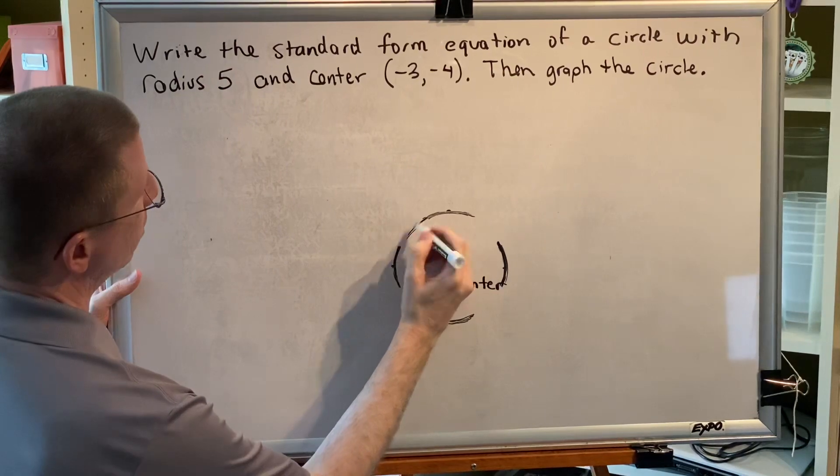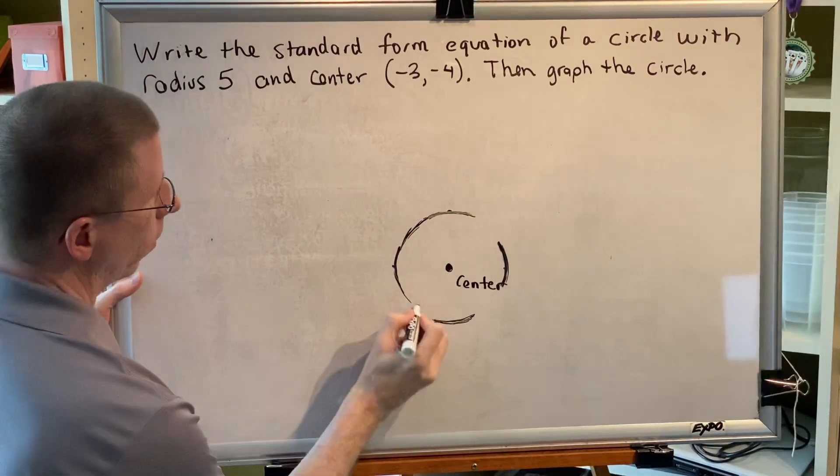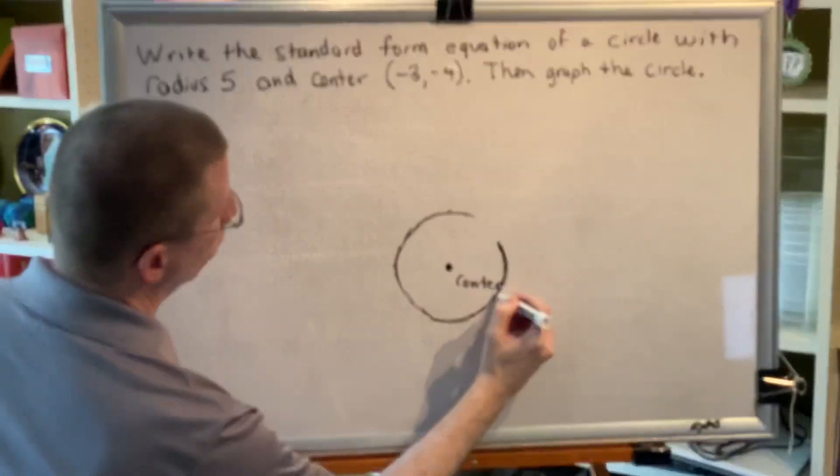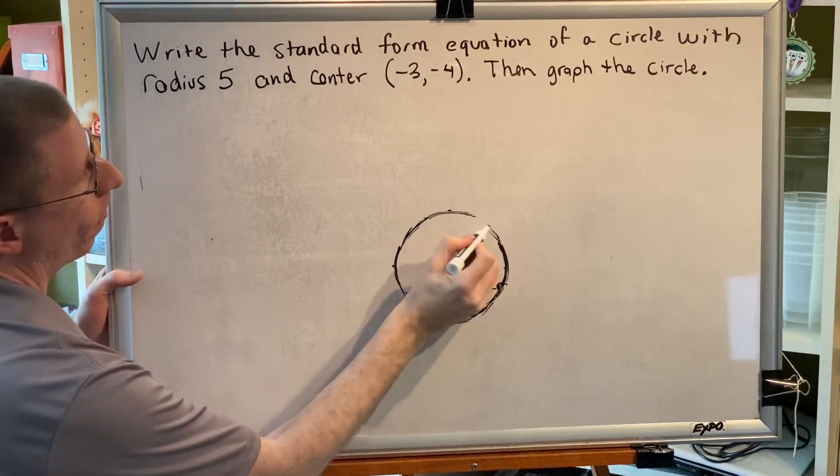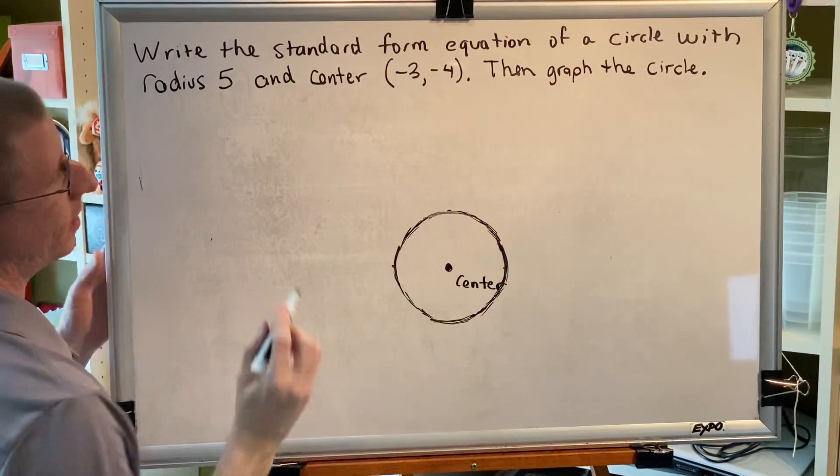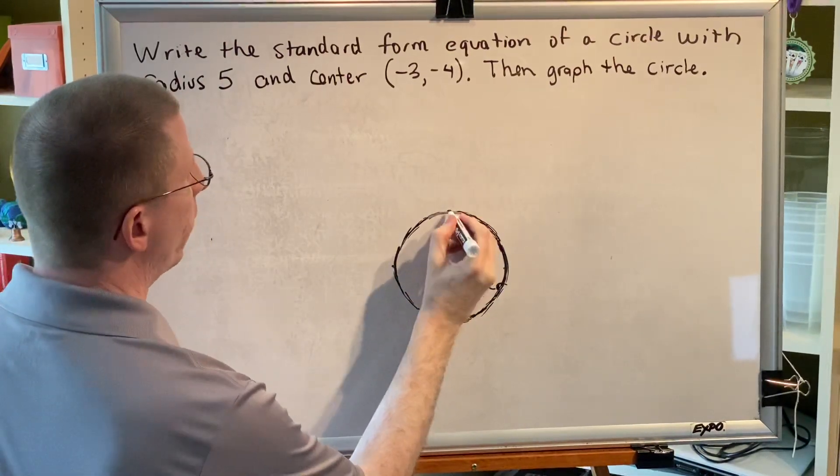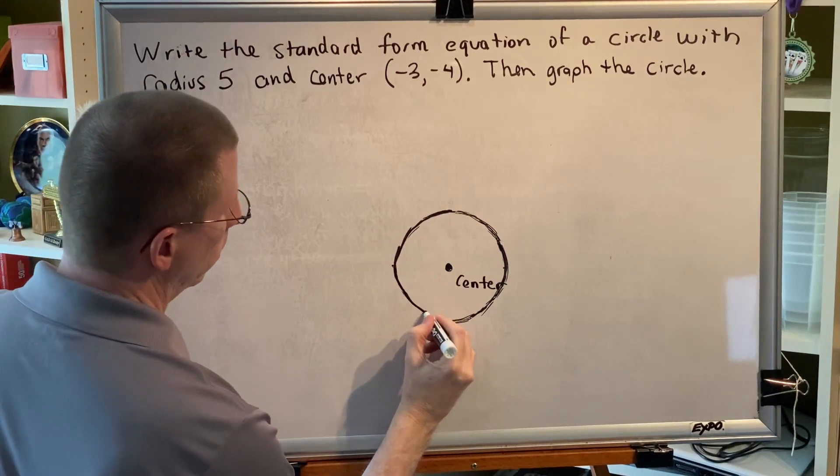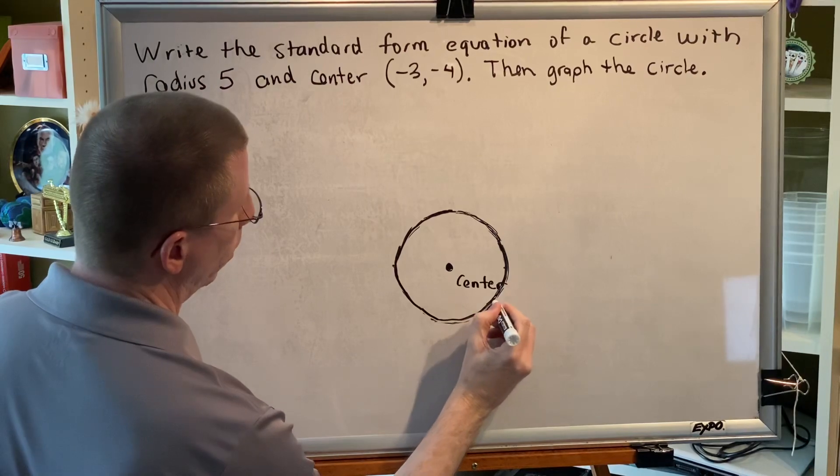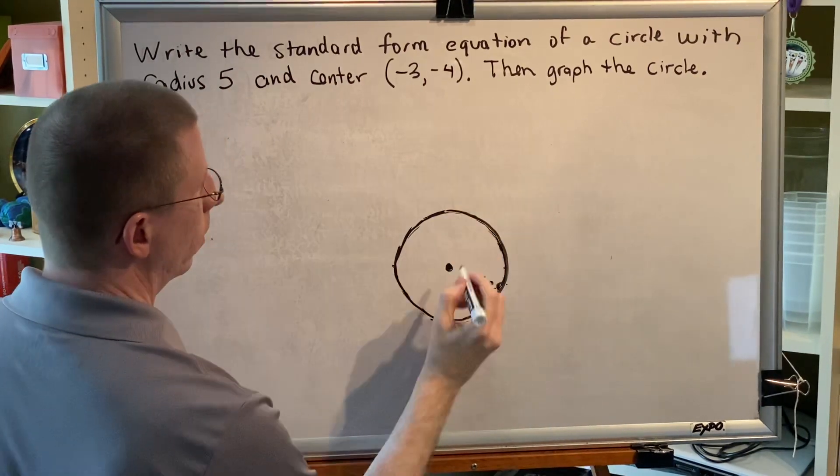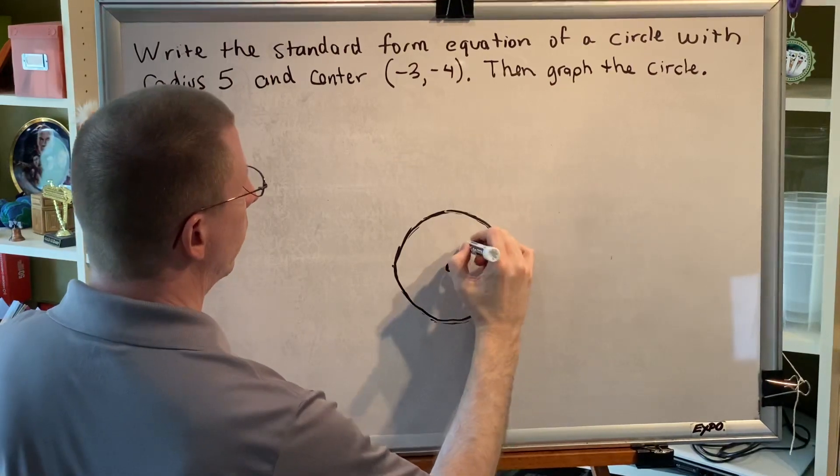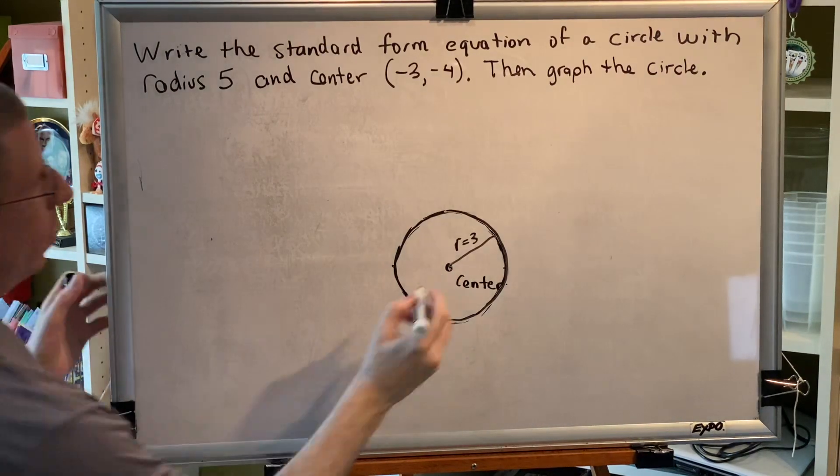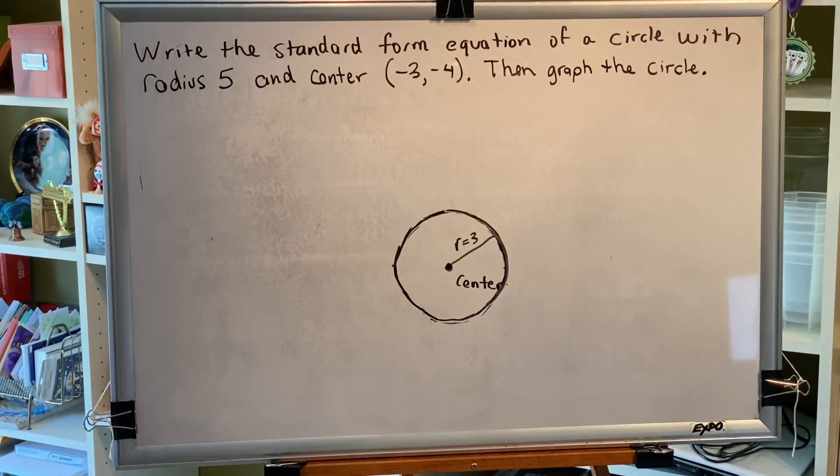Now when you try to connect these together, you'll get something that looks like a circle. Notice that I'm using a sketching approach. Once you've sketched out your circle, then you can go back over it with a solid line to create your final picture. So we've now created the graph of a circle whose center is shown and whose radius is provided, three.